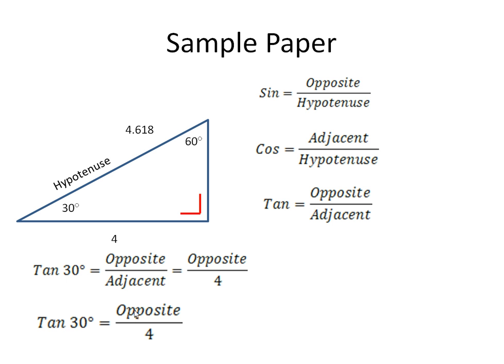If I just multiply both sides by 4, I get that the opposite is equal to 4 times tan of 30, which is 2.309.